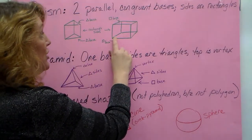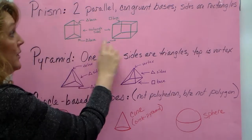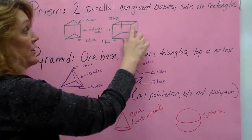Here is a rectangular-based prism. So it's got a rectangle on the bottom, a rectangle on the top, and it's got rectangles on the sides.